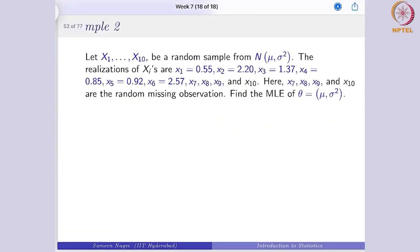To understand this, let us consider these given values. Suppose x1, x2, ..., x6 — this is a random sample of size 10 coming from a normal distribution with mean mu and variance sigma square. In this case, 6 observations are given to us and the rest 4 are missing, and we have to find out the MLE.